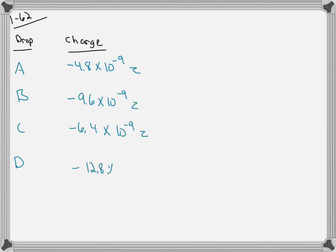So for example, if we look at the difference in charge between A and B, it's 4.8 times 10 to the negative 9 zorgs. The next one is 3.2 times 10 to the negative 9 zorgs. And this one's 6.4 times 10 to the negative 9 zorgs.